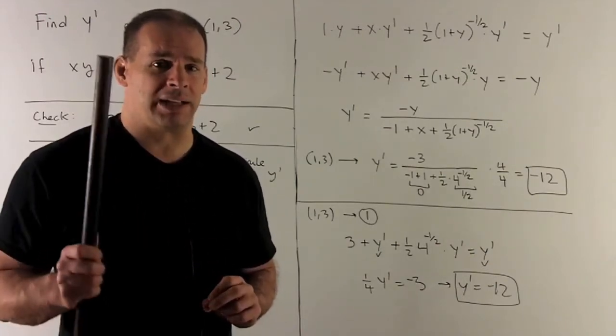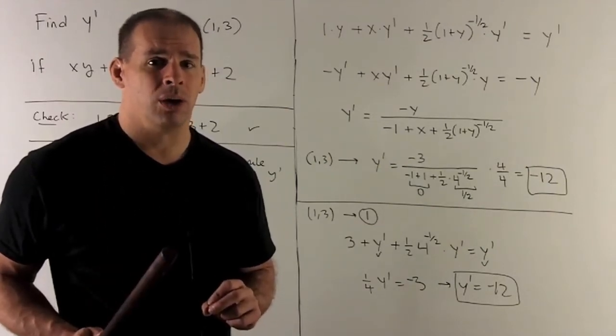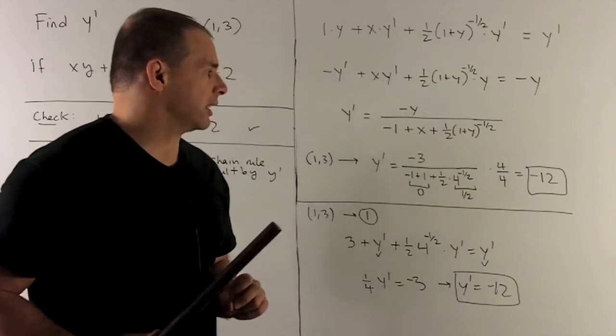I can clean that up by multiplying top and bottom of the big fraction by four over four, which gives me a minus 12 at the end of the day.